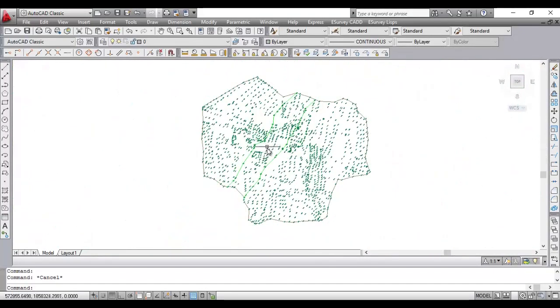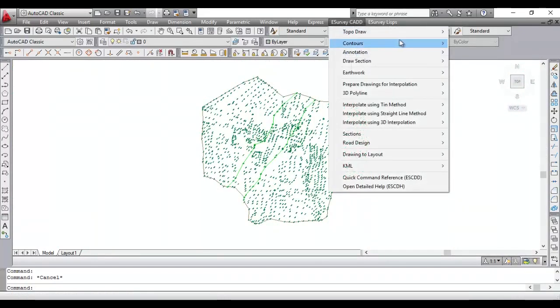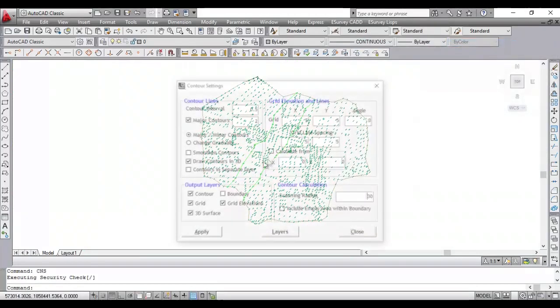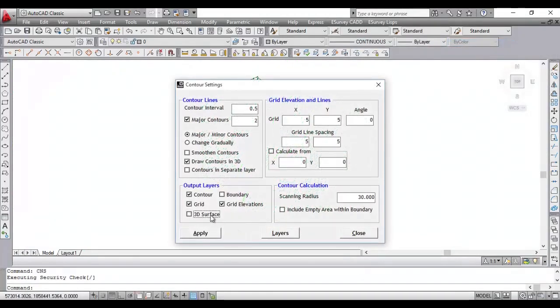The software will automatically consider all the lines in break line layer and generate contours. On application of break lines, the software will not allow the triangulation to cross over the break lines. Thus, a desired surface is created.